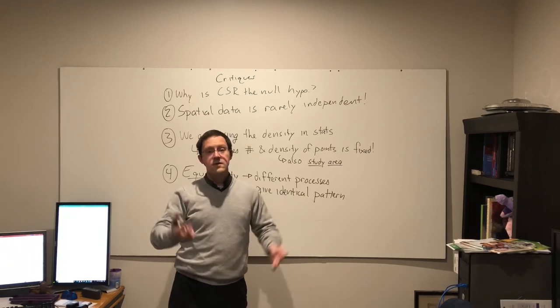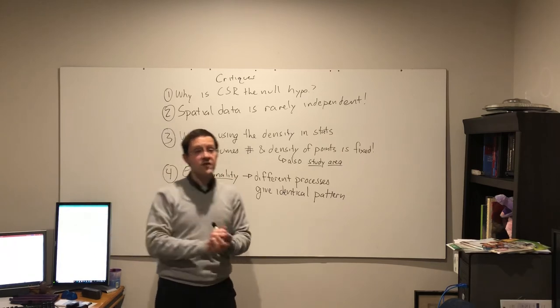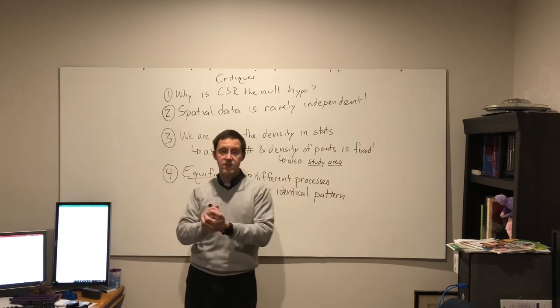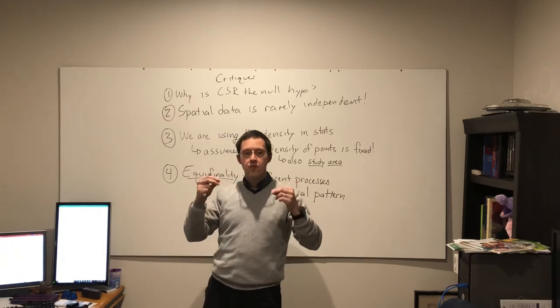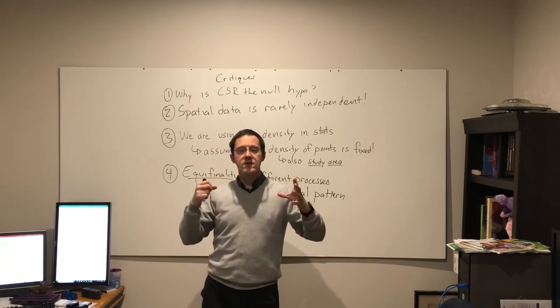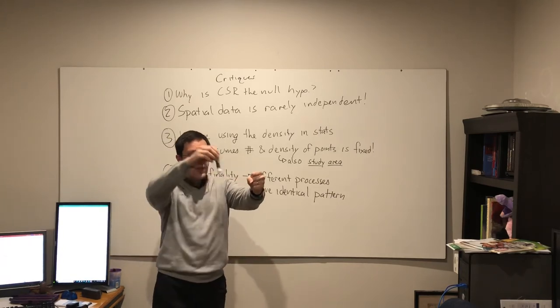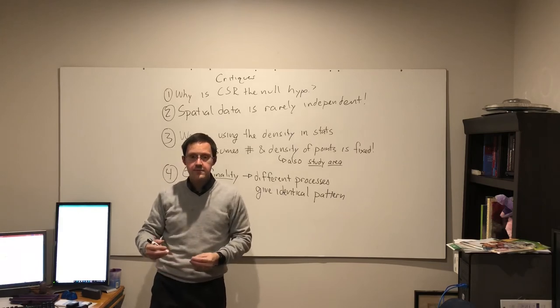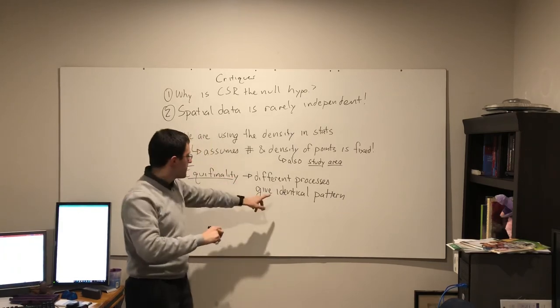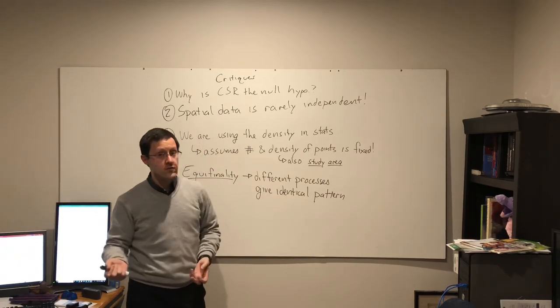So again, there's a cluster, but instead of it being a cluster because of the first assumption, it's a cluster because of the second assumption of complete spatial randomness being broken, where they are no longer independent, that the parent tree and the descendant trees have to be close to each other. Those are different processes, but they can give an identical pattern. They can give the same results.